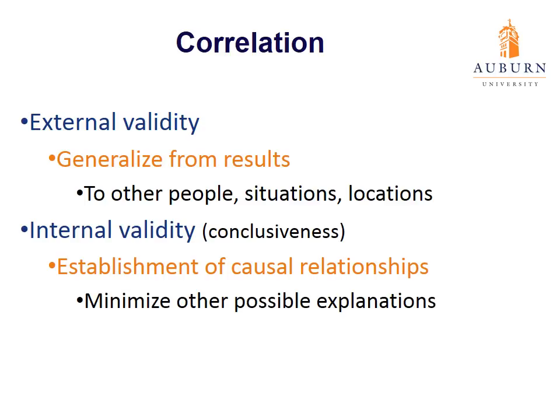The other type of validity we should be concerned about is internal validity. Internal validity is not so much interested in generalizability — it is rather concerned with what we call conclusiveness. In other words, can we establish a causal relationship between variables? To do this, we have to minimize all other possible explanations. If we randomly assign to levels of the independent variable, we equate our two groups on all possible characteristics except for the one being manipulated — that is a measure of internal validity.